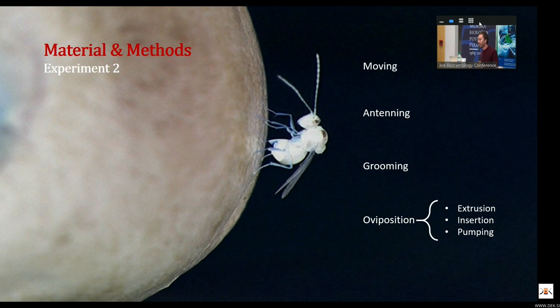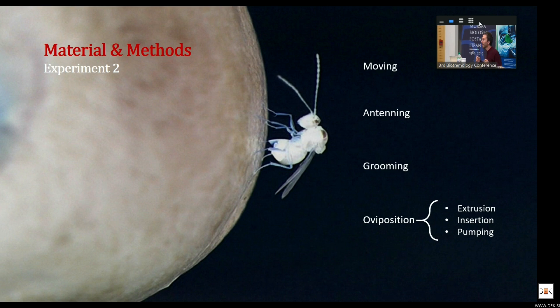We assessed four different kinds of categories of behaviors. Moving, which was the insect without any interaction. Antennating, where the insect was entering and touching the blueberries. Then we had grooming, where the insect was cleaning wings, cleaning abdomen, and antennae. And then in the category of oviposition, we looked at extrusion when the insect was extruding the ovipositor, insertion when it was inserting within the blueberries, and pumping, which is the effect of the muscle pulsating to allow the oviposition.